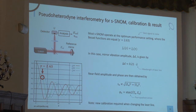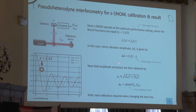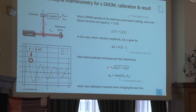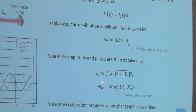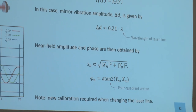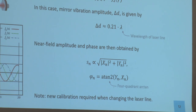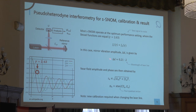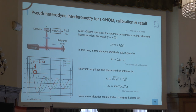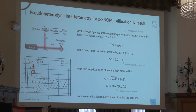Once we have done this calibration, we can write down the near-field amplitude and phase signal. The amplitude is simply the square root of the sum of squares of our real and imaginary parts, and the phase phi is just the four-quadrant arctangent function. Note that when we change the laser line we have to recalibrate, but small errors of 1-2% result in only ~1% error in the phase signal.